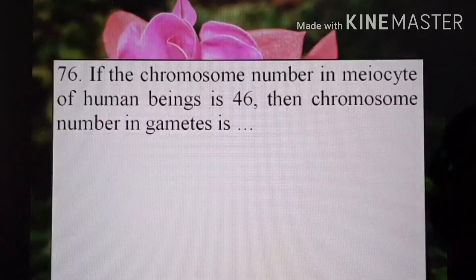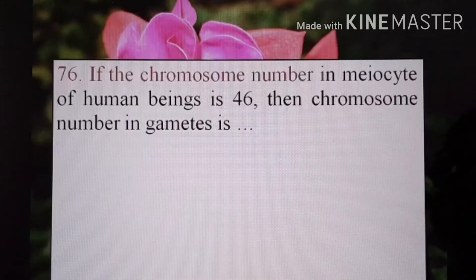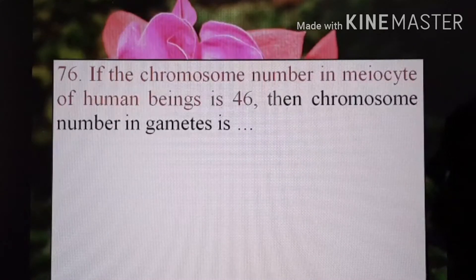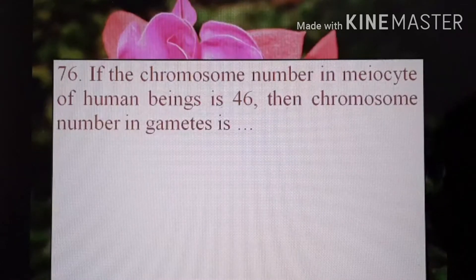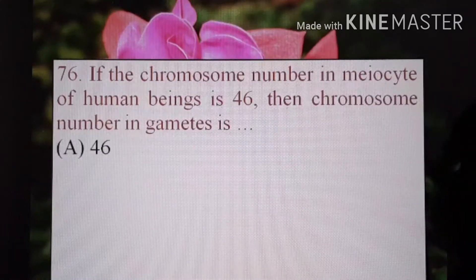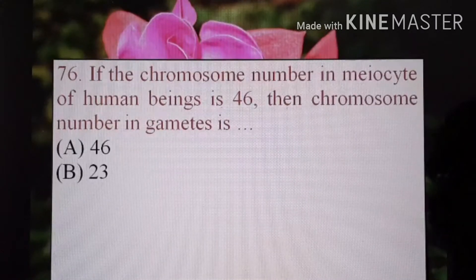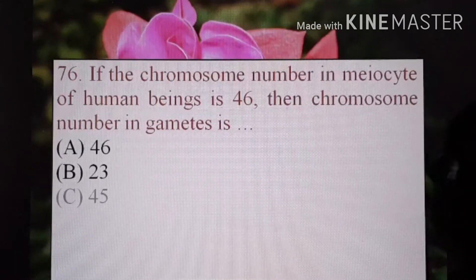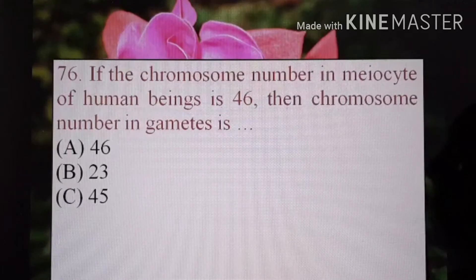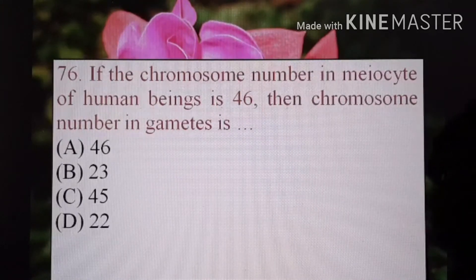Let's start. Now, if the chromosome number in the meiocyte of human beings is 46, then the chromosome number in gametes is — A) 46, B) 23, C) 45, or D) 22.